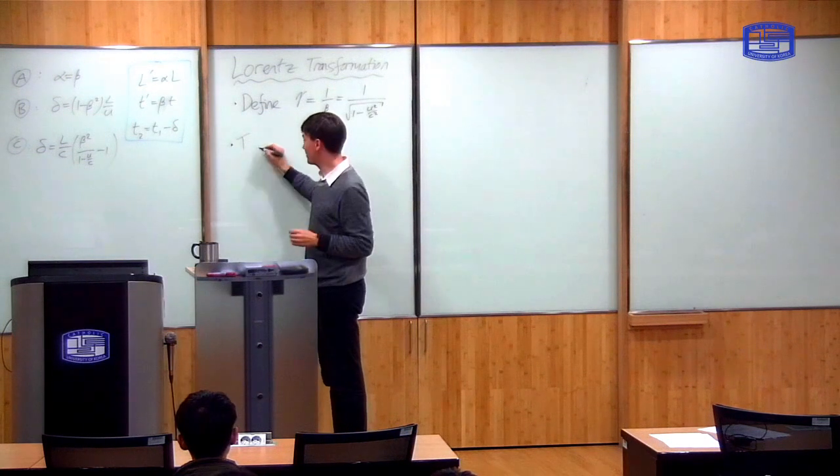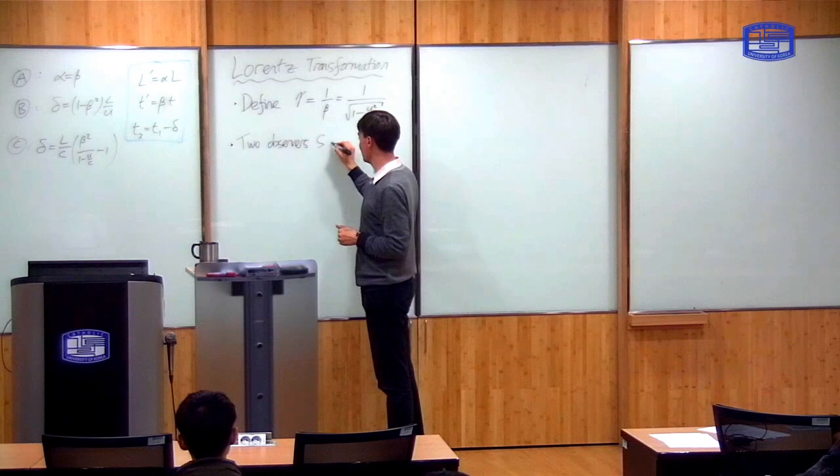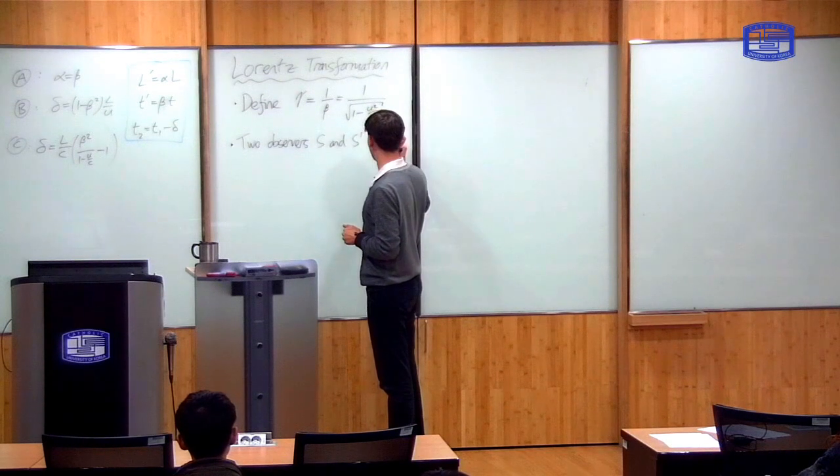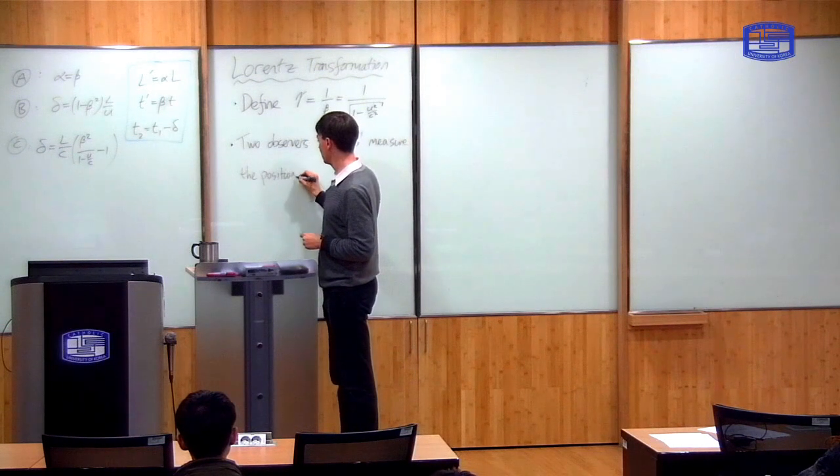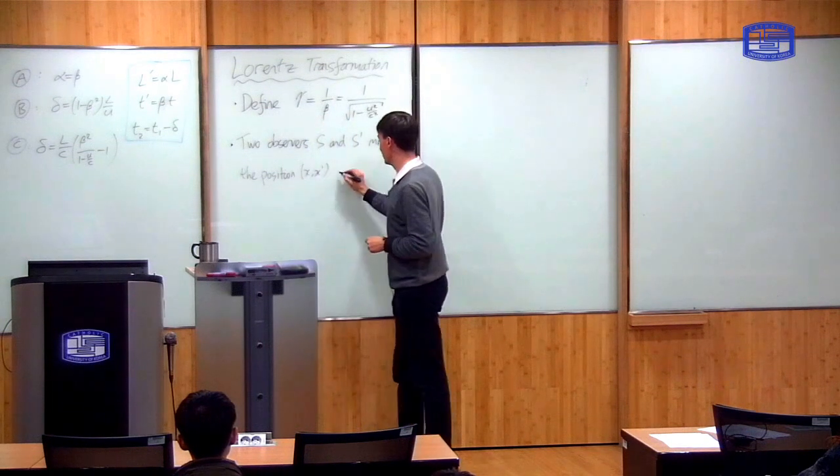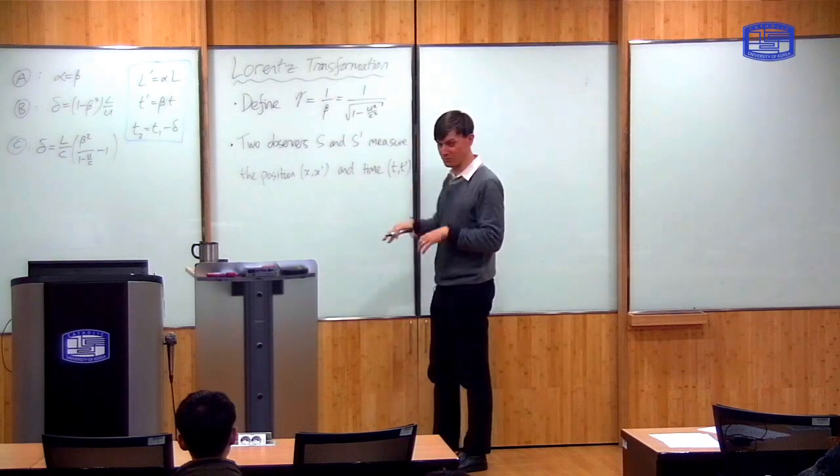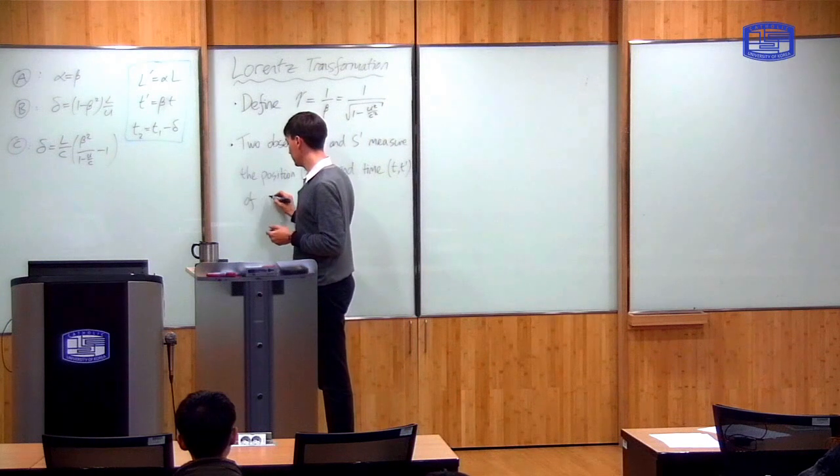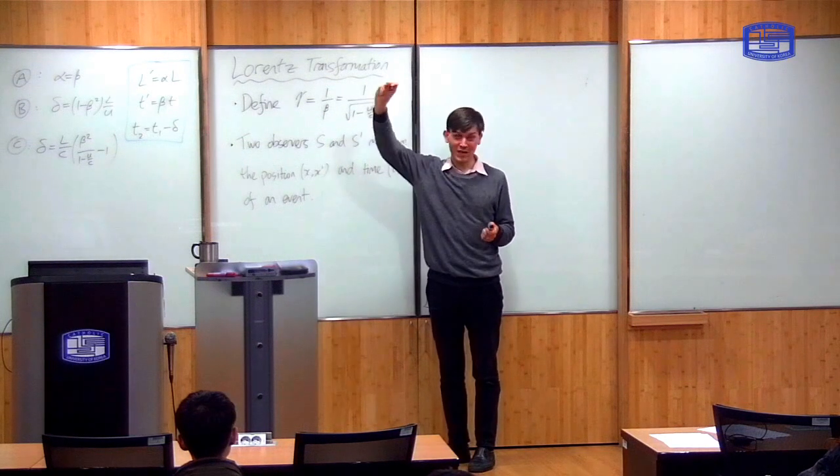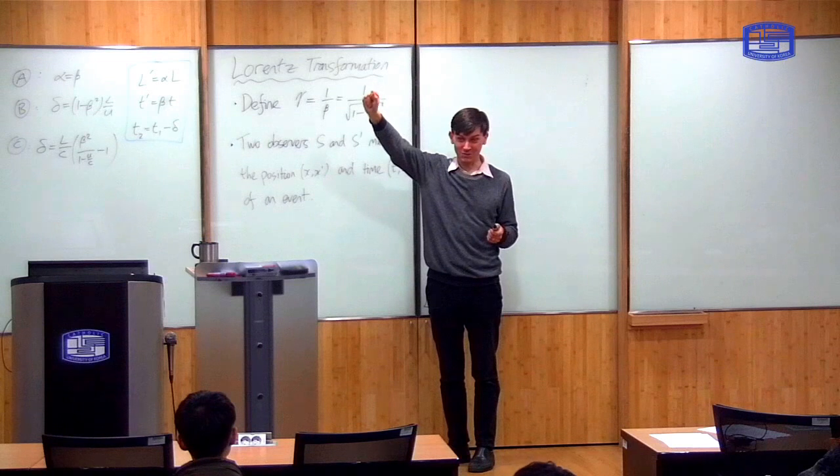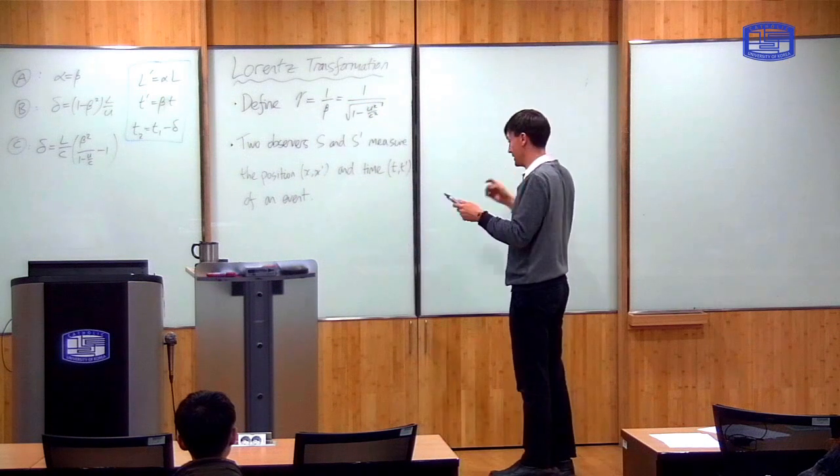So again, we're going to do a kind of thought experiment. Two observers, S and S prime, measure the position, which is x or x prime, and time, which is t or t prime, of something, of an event. So event is just a general term. Something happens somewhere in space, and two different observers measure the position at which it happens and the time at which it happens.